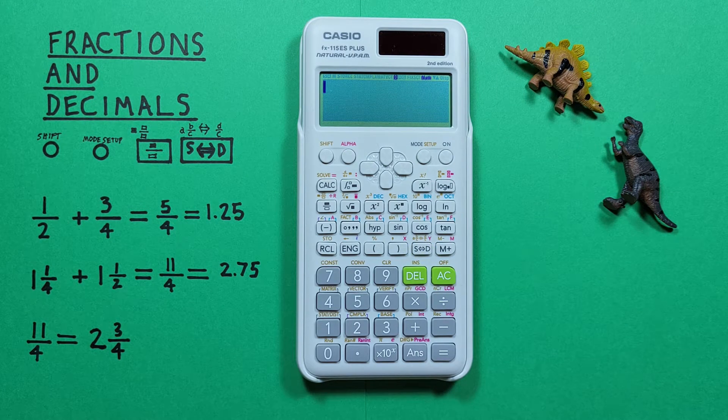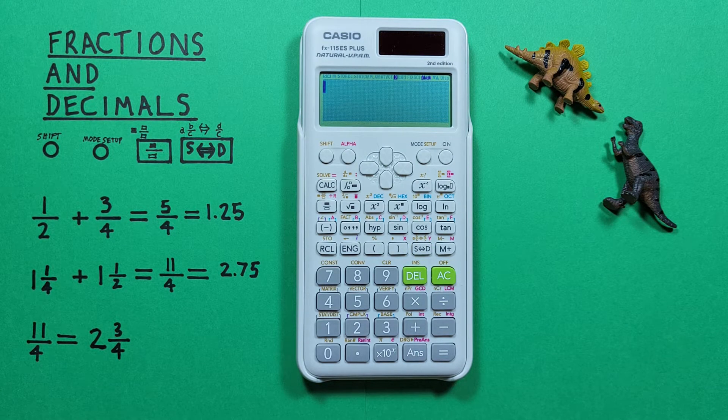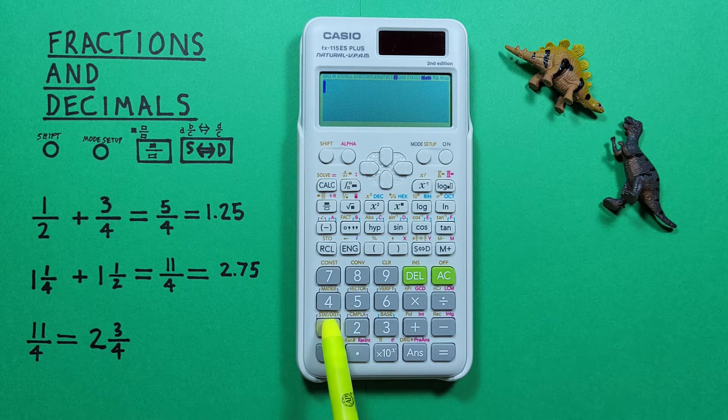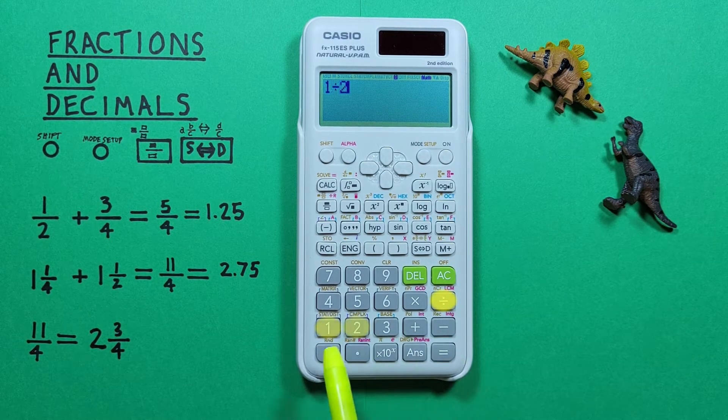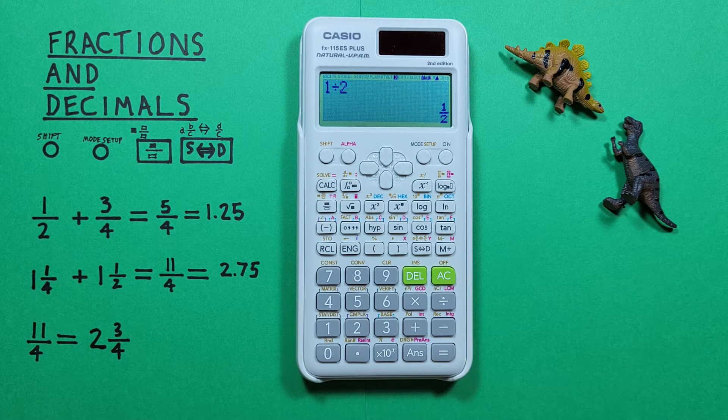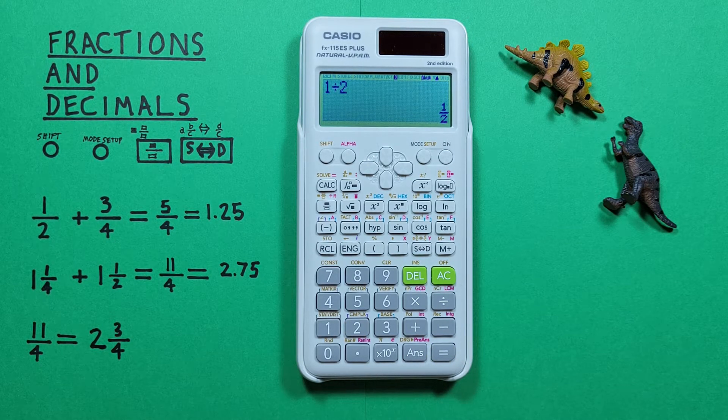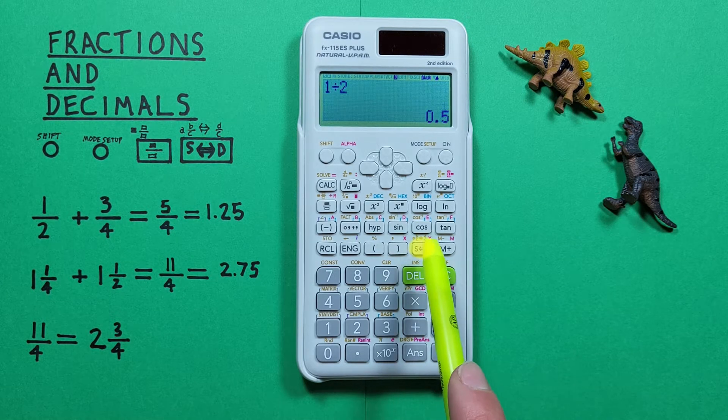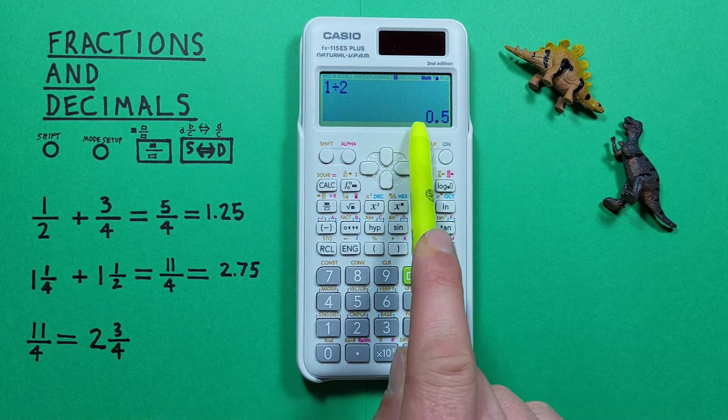When you start using this calculator, one of the first things you'll notice is when you're doing a calculation like 1 divided by 2, it'll give you a fraction as an answer. Now if you want to just get this as a decimal, you can press the S to D key and see it converts to 0.5.